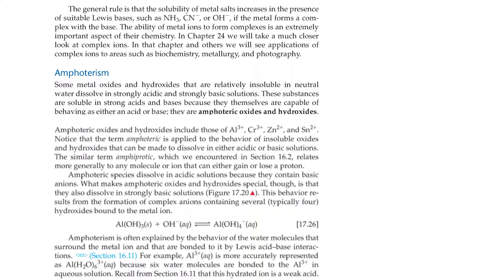Notice that the term amphoteric is applied to the behavior of insoluble oxides and hydroxides that can be made to dissolve either in acidic or basic solutions. The similar term, amphiprotic, which we encountered in Section 16.2, relates more generally to any molecule or ion that can either gain or lose a proton. Amphoteric species dissolve in acidic solutions because they contain basic anions. What makes amphoteric oxides and hydroxides special, though, is that they also dissolve in strongly basic solutions. This behavior results from the formation of complex anions containing several, typically four, hydroxides bound to the metal ion.